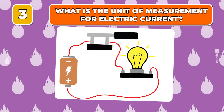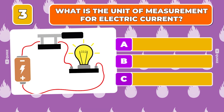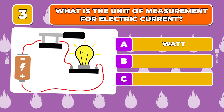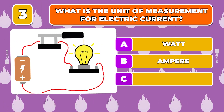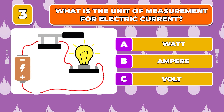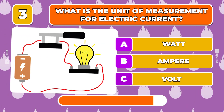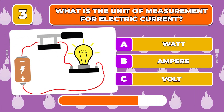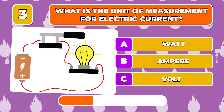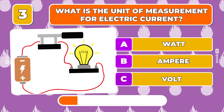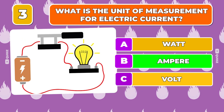Question 3. What is the unit of measurement for electric current? Watt? Ampere? Volt? That would be Ampere.